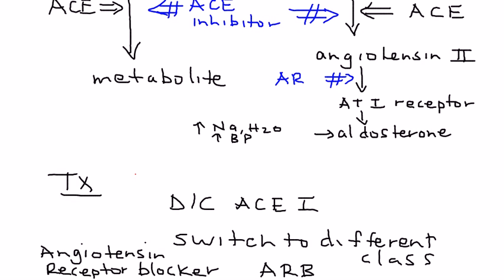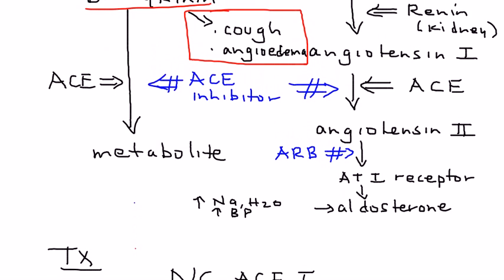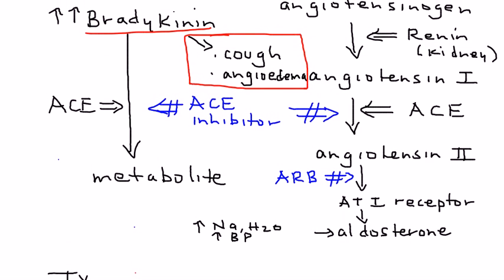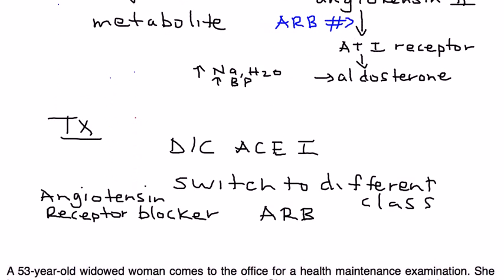This angiotensin receptor blocker blocks this step right here. So it's involved in the same pathway, but it doesn't interfere with the bradykinin pathway. So it doesn't lead to cough in the same way that an ACE inhibitor would.